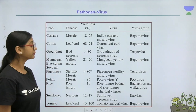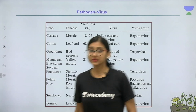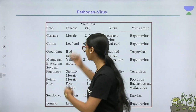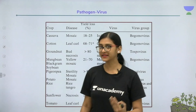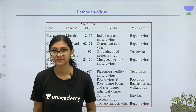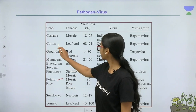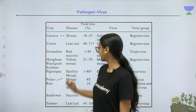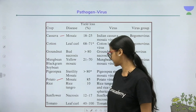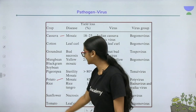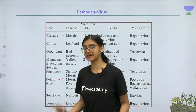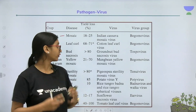The next pathogen is virus. The symptoms of viral diseases are often reflected in the names given to them — yellow mosaic, bud necrosis, leaf curl. You have heard about TMV, Tobacco Mosaic Virus, which causes tobacco mosaic disease. Similarly, in cassava and black gram and mung bean, we are also able to see mosaic diseases.